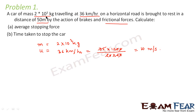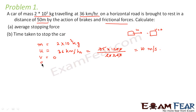The car is brought to rest in a distance of 50 meters. That means the car started moving with velocity u, and after some time it comes to rest, so the final velocity v = 0. It traveled a distance of 50 meters after which it came to rest, so the distance s = 50 meters. The question asks us to calculate the average stopping force — that means how much force is needed to stop the car.